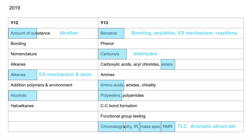Amount of substance was tested via titration, which is quite unusual for an organic paper. Alkenes had the electrophilic addition mechanism and isomerism. The benzene question saw the bonding in benzene — the delocalised model versus Kekulé's structure — acylation, the electrophilic substitution mechanism and quite a few reactions of benzene. The carbonyls question concentrated on aldehydes and structure determination, which tested TLC — thin layer chromatography — and the big structure determination question was an aromatic compound.